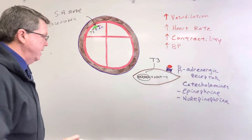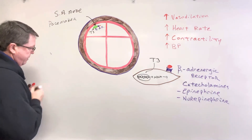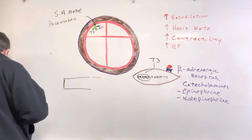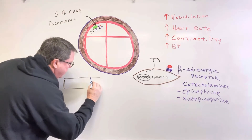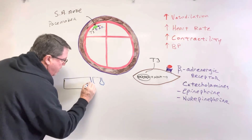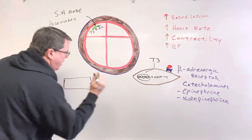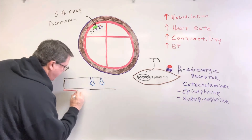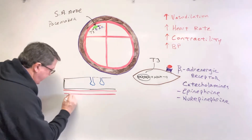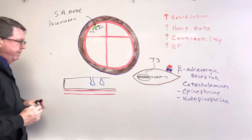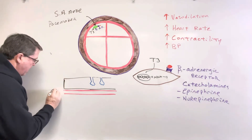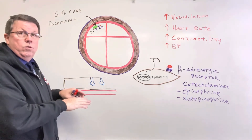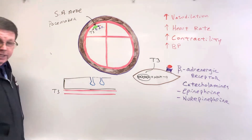Now let's take a look at what's going to happen on the skin. I'm just going to draw the skin here. Inside the skin, we are going to have sweat glands, and we're also going to have blood vessels — basically an artery right here. What's going to happen is my T3 is going to cause vasodilation. You see how small this blood vessel is — especially in times when you're hot, it's going to increase the size of that blood vessel, and that's called vasodilation.